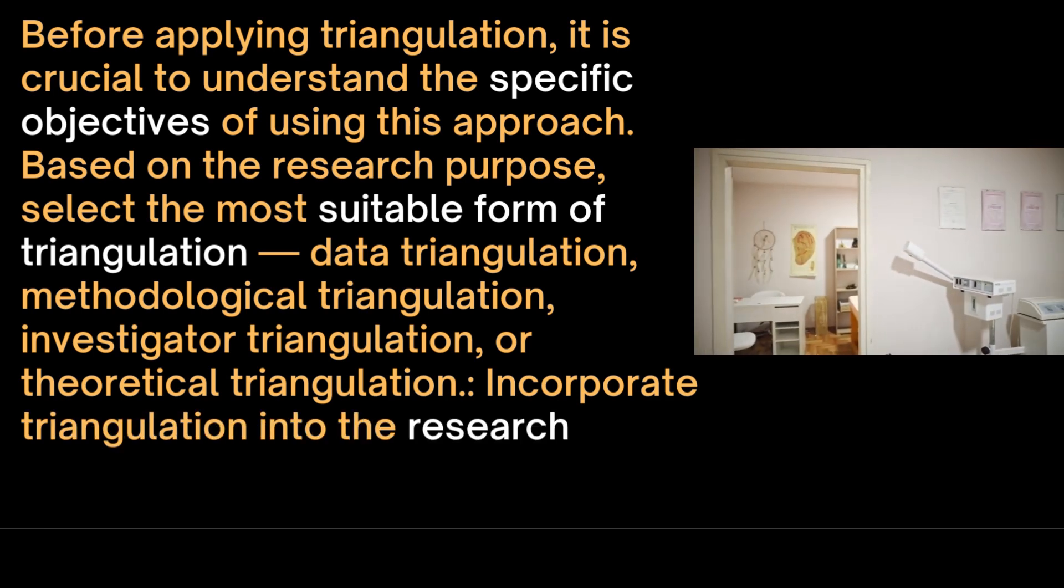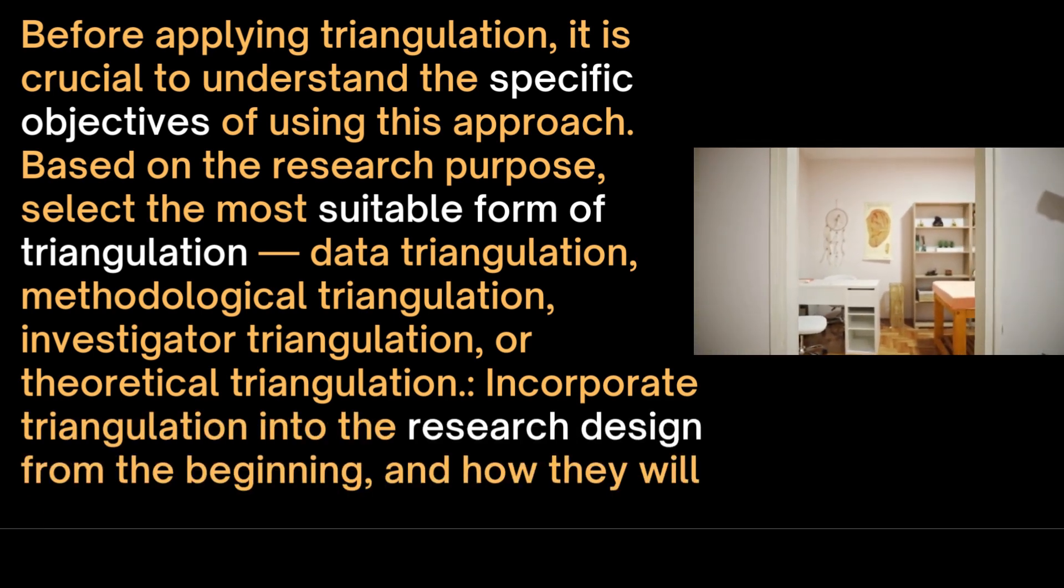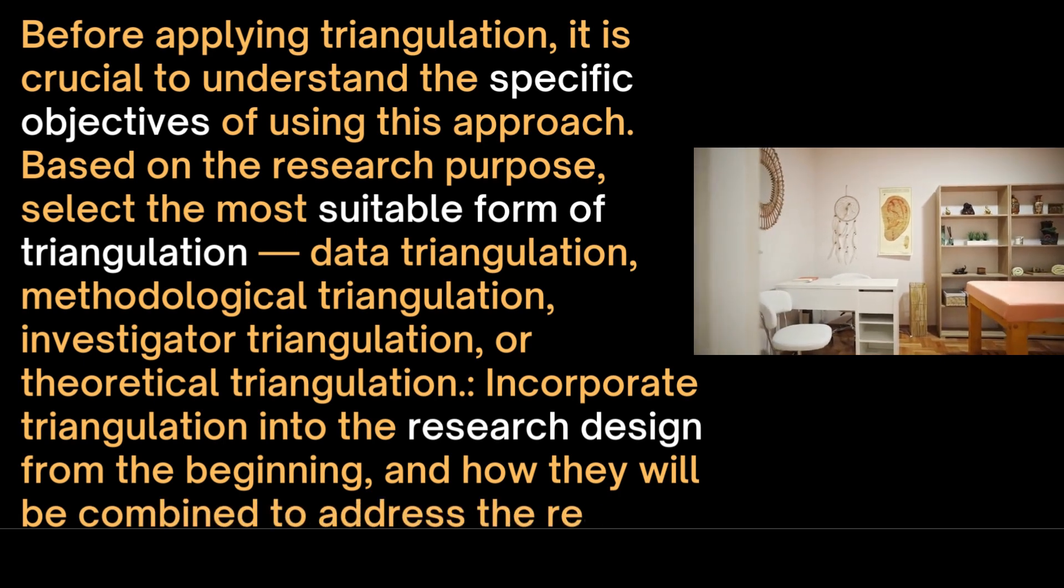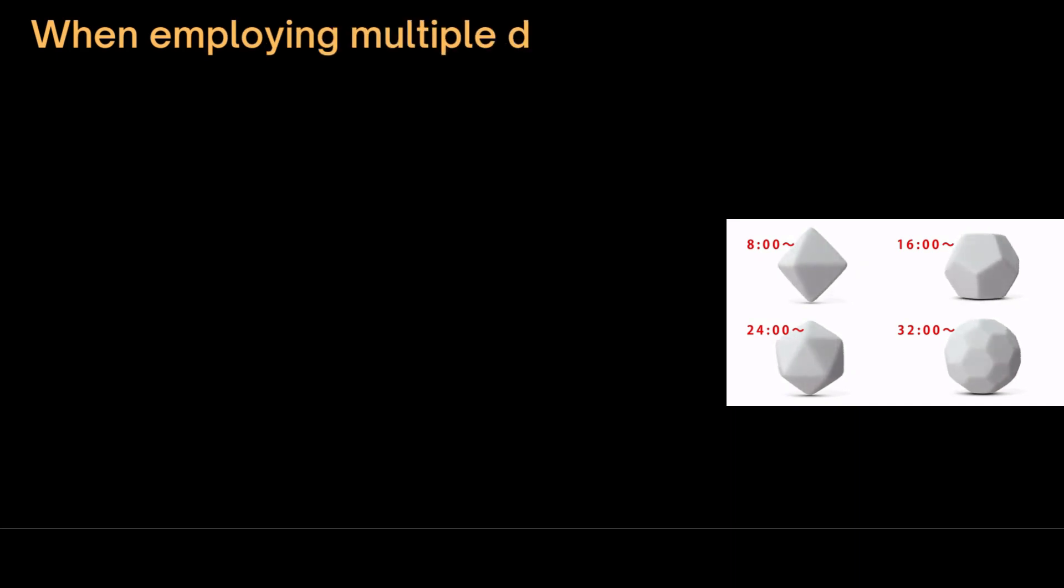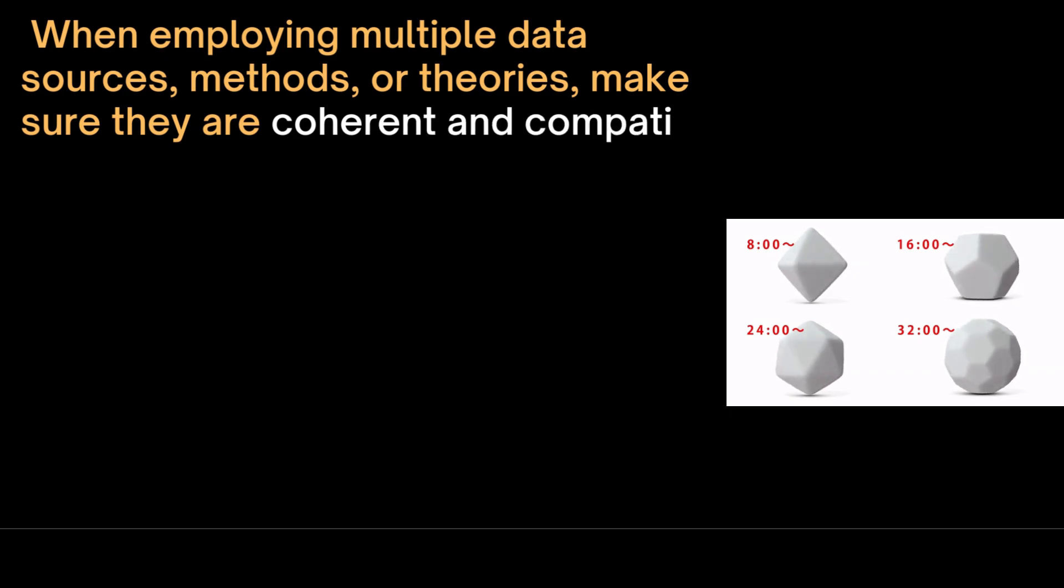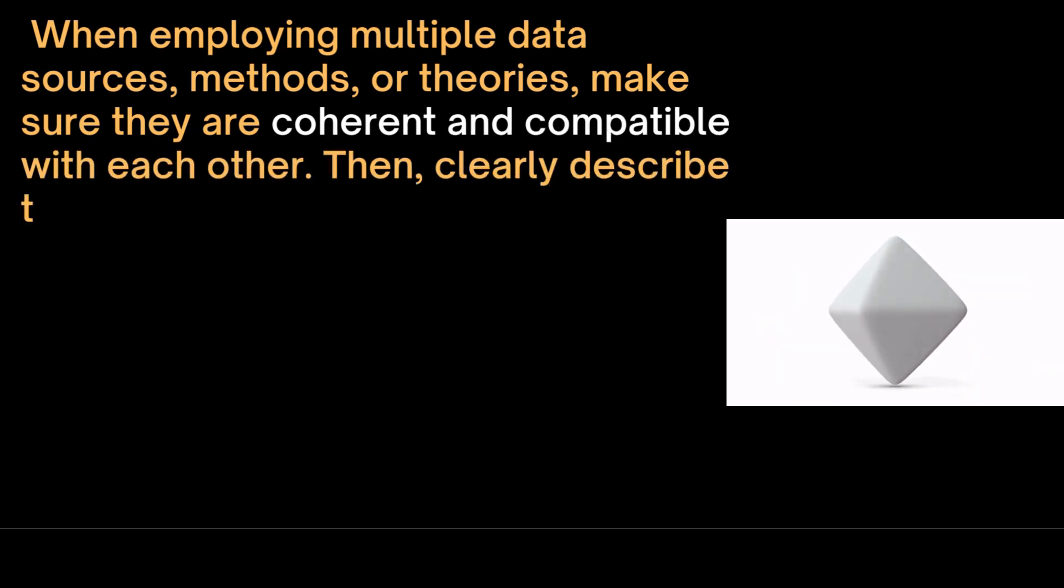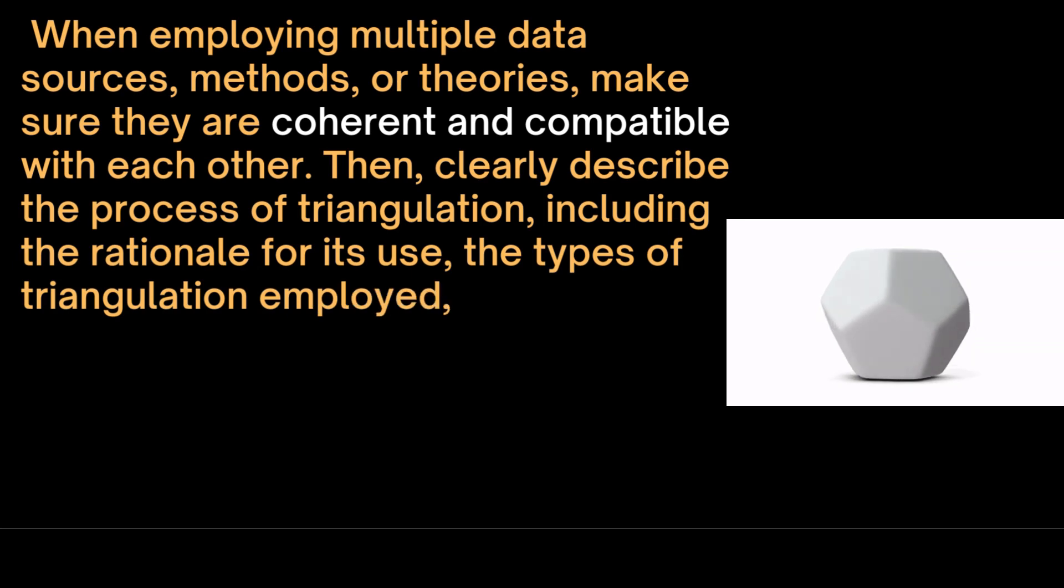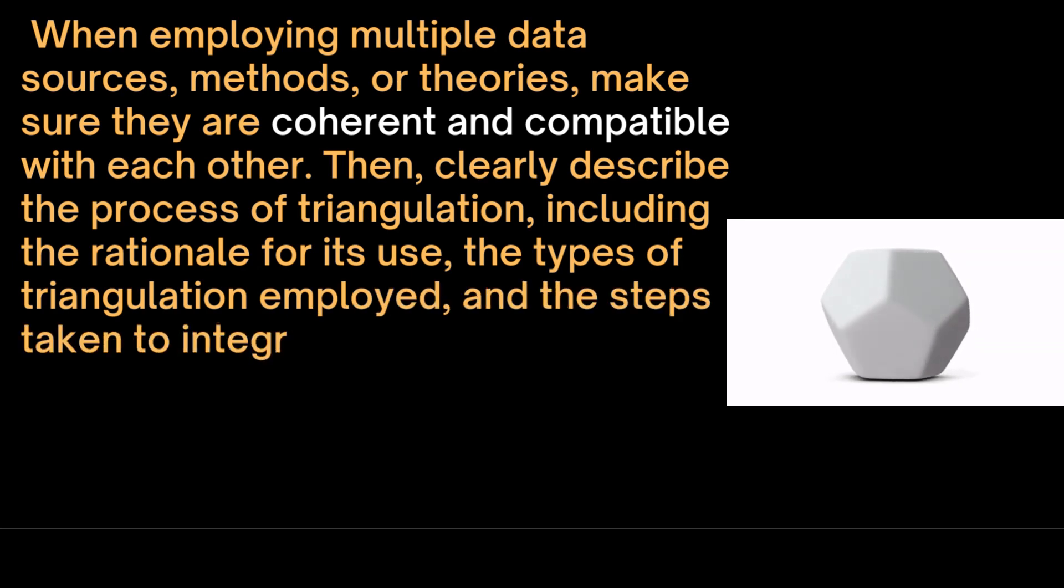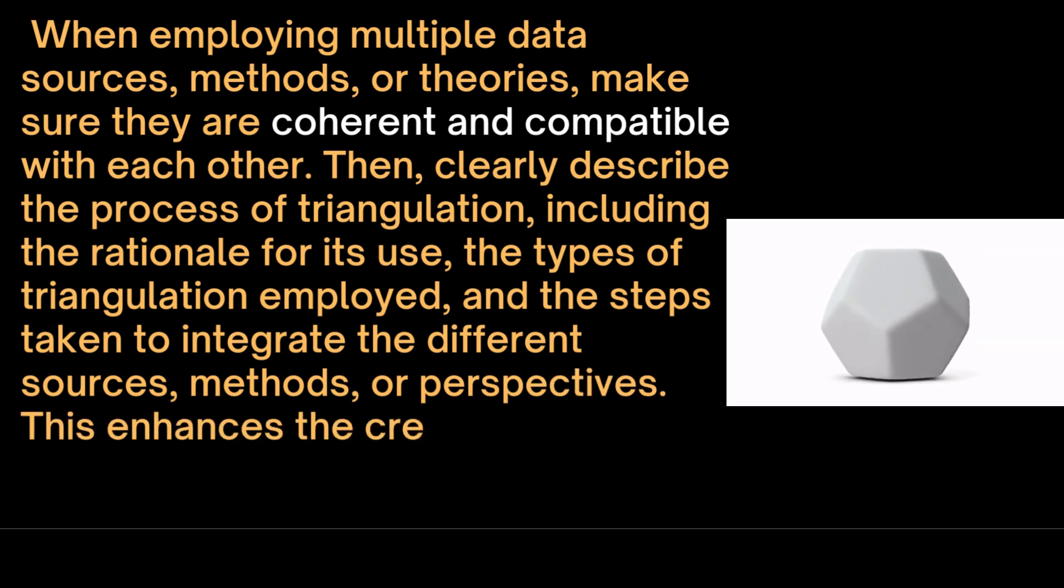Then incorporate triangulation into the research design from the beginning and suggest how they will be combined to address the research question. When employing multiple data sources, methods, or theories, make sure they are coherent and compatible with each other. Then clearly describe the process of triangulation, including the rationale for its use, the types of triangulation employed, and the steps taken to integrate the different sources, methods, or perspectives. This enhances the credibility and trustworthiness of the research findings.